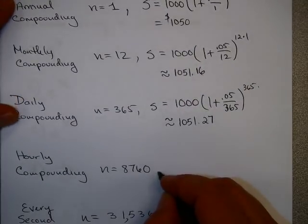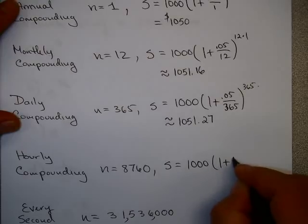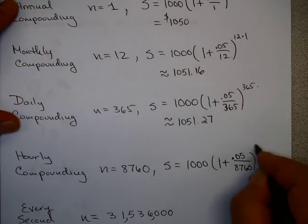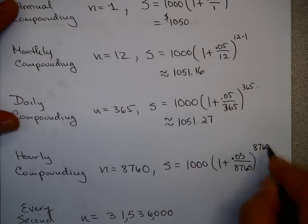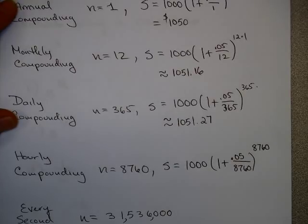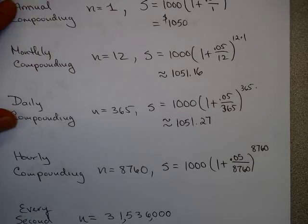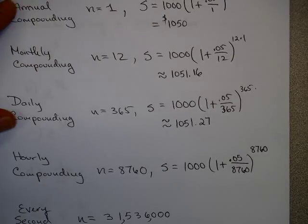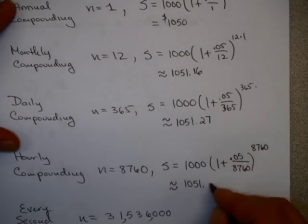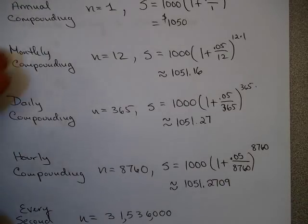Let's suppose you did this every hour. I would take that 0.05 and divide by 8,760 and raise to the 8,760. I end up getting $1,051.27.09. So I didn't even really gain another penny.